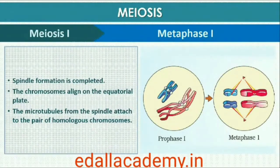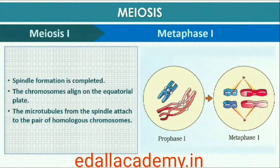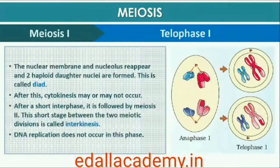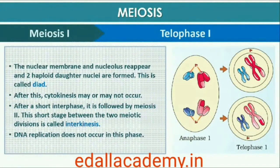At Metaphase I, the bivalent chromosomes align on the equatorial plate. The microtubules from the opposite poles of the spindle attach to the pair of homologous chromosomes. At Anaphase I, the homologous chromosomes separate while sister chromatids remain associated at their centromeres. At Telophase I, the nuclear membrane and nucleolus reappear, cytokinesis follows, and this results in a dyad of cells.